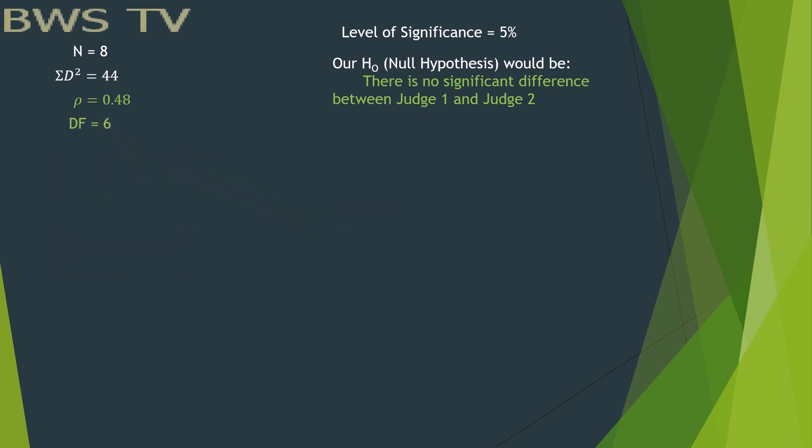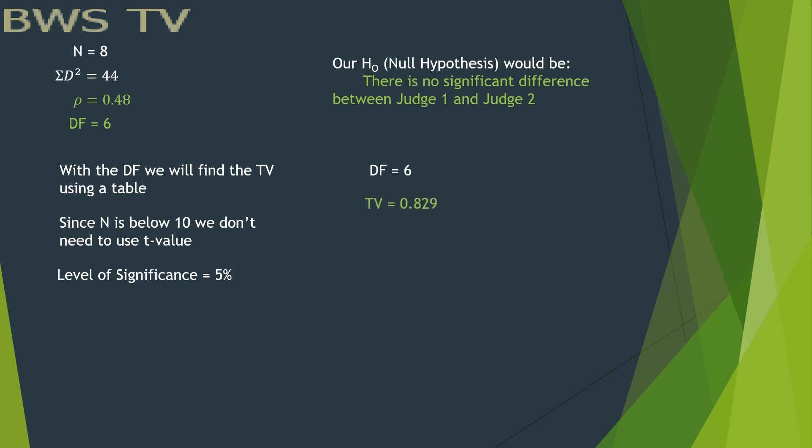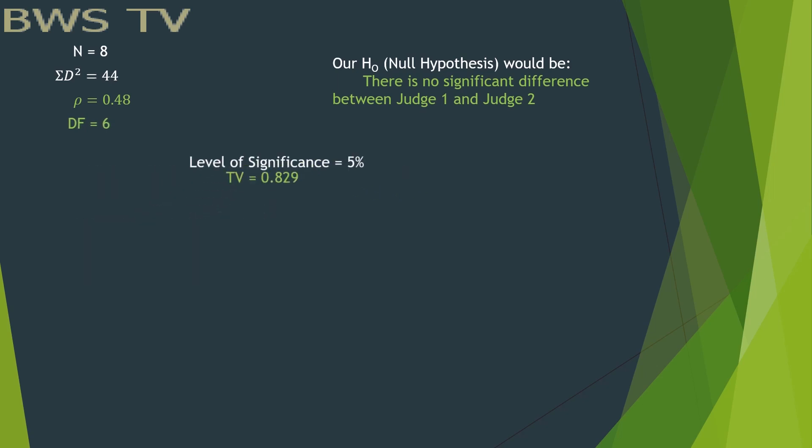With the DF, we will find the TV using a table. Since n is below 10, we don't need to use t-value. With the level of significance as a basis, we must find it in the table of values for Spearman. Since we can't provide the table, we will provide the TV.